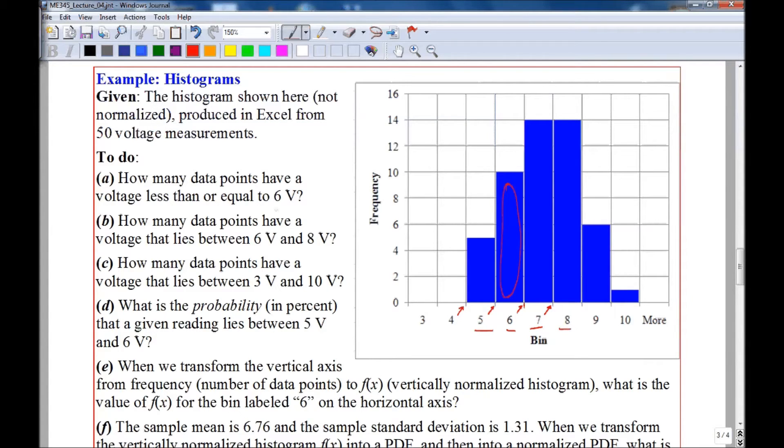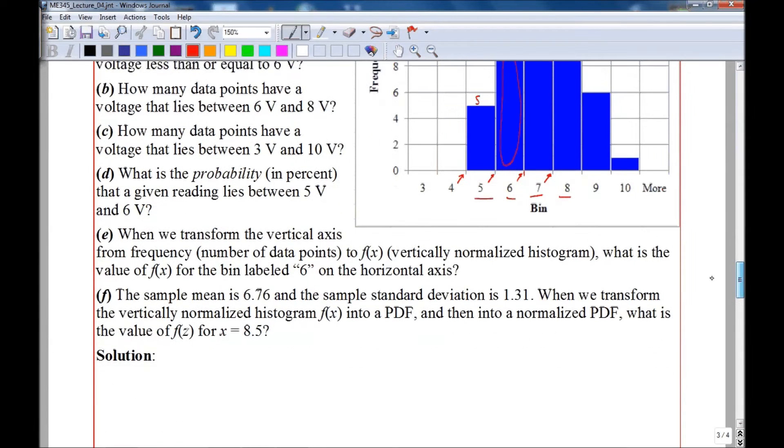Let's answer some of these questions. How many data points have a voltage less than or equal to six volts? Well, that would be all the values lower than this line here at six volts. There's five values between four and five, and there's ten between five and six, so we would write five plus ten equals fifteen.